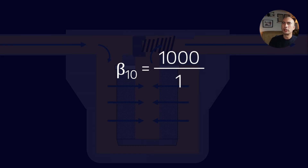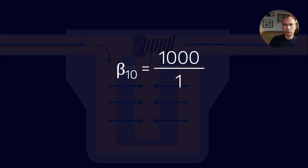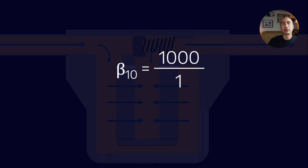The beta ratio is not the be-all and end-all. It has to be used in conjunction with a bunch of other performance metrics when choosing a filter. For example: what is the dirt carrying capacity of the filter? What is the surge capacity? What is the flow rate capacity? What is the differential pressure across the filter? These all matter.